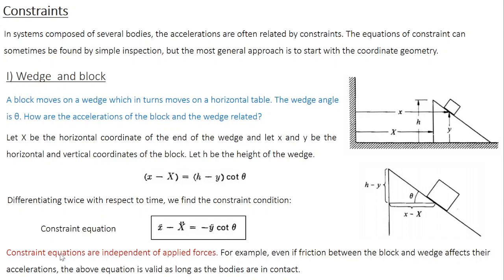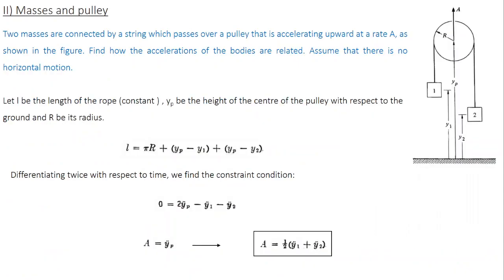As you can see, constraint equations are independent of the applied force — there is no force term here. So even if friction between the block and the wedge affects their acceleration, the above equation is valid as long as the bodies are in contact. Let's take another example: a mass and pulley system.